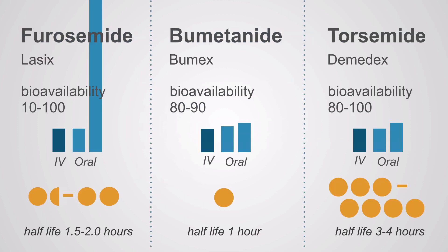There are three loop diuretics with different characteristics. The most familiar is furosemide, trade name Lasix, but there are two others: bumetanide and torsemide. They vary primarily from Lasix in terms of bioavailability — essentially the ratio of an IV dose to what you need orally. With Lasix, bioavailability is unpredictable, whereas the bioavailability of bumetanide and torsemide is much more predictable, making it easier to convert patients from IV to oral. The half-life also differs: Lasix is one and a half to two hours, bumetanide is shorter, and torsemide has a longer half-life.